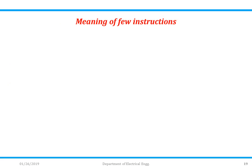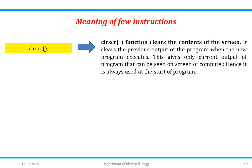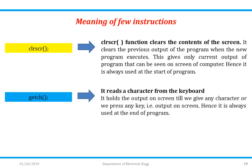Let us understand a few more instructions. The clrscr() function clears the contents of the screen. It clears the previous output so only the current program's output is visible, and is always used at the start of a program. Next is getch(): it reads a character from the keyboard and holds the output screen until any key is pressed. Hence it is always used at the end of a program.